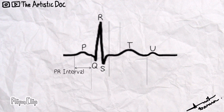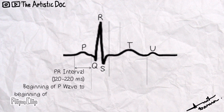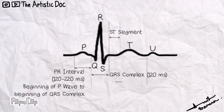Now the PR interval is 120 to 220 ms long, starting from the beginning of the P wave to the beginning of the QRS complex. The QRS complex is 120 ms long, and there is also an ST segment and QT interval.